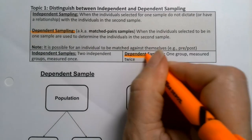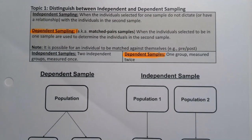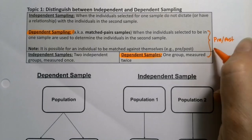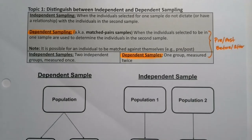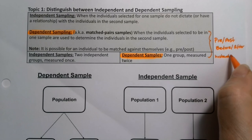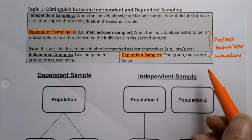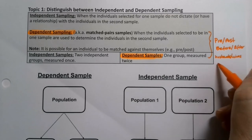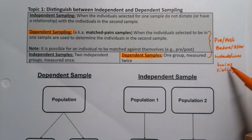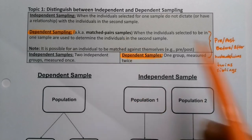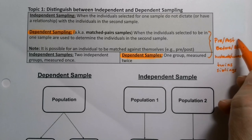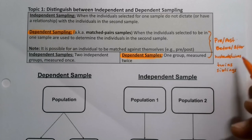Dependent sampling can be the same persons — you have a group of people and you measure them before and after. That's a group of people measured against themselves. But you can also have people that are related to each other, like spouses, twins, or siblings. Once you pick one twin, the other twin has to be selected. The most common examples we use are pre and post, or before and after, but the related-pairs version is also possible.